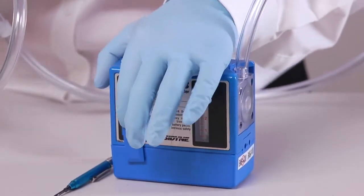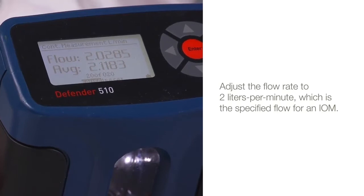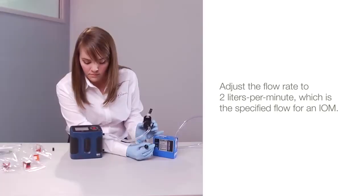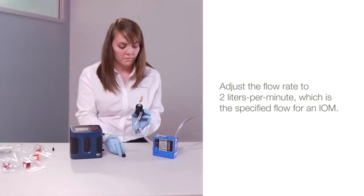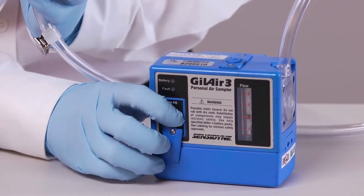Turn on the pump and adjust the flow rate to two liters per minute, which is the specified flow for IOM sampling. When finished, turn off the pump.